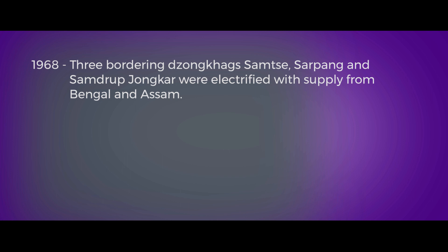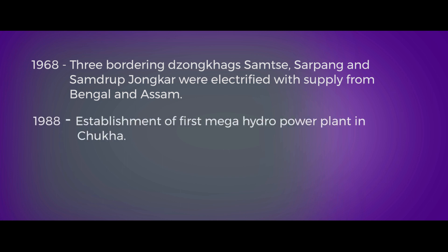The first mega hydropower plant was set up in Bhutan in 1988, and that is the Chuka hydropower plant — the first mega hydropower plant in the country.